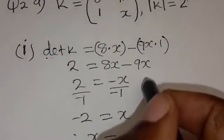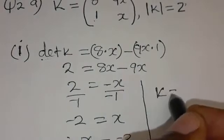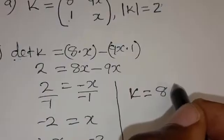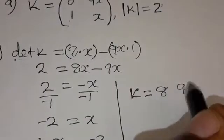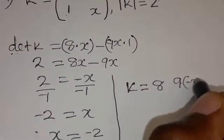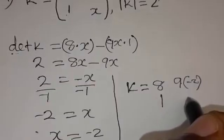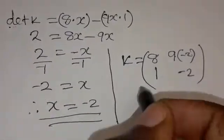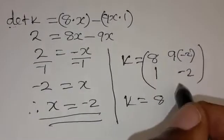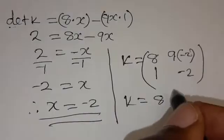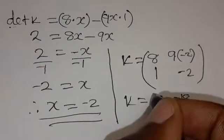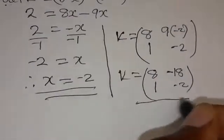So X is equal to negative 2. This means the matrix K will now be written as: 8, then 9X — we found X is negative 2 — so 9 times negative 2, then 1, negative 2. So K equals the matrix with entries 8, negative 18, 1, negative 2.